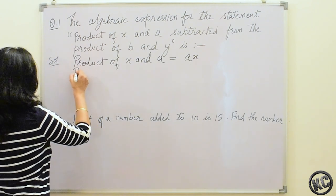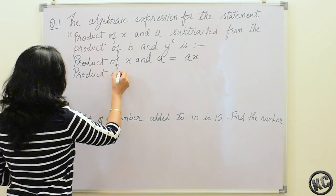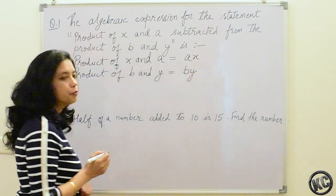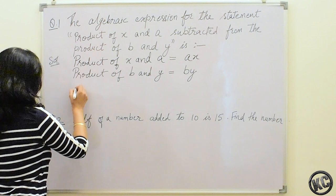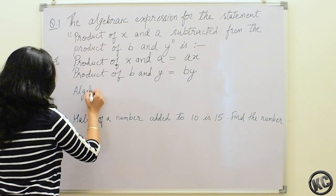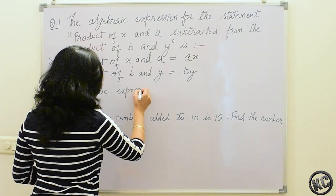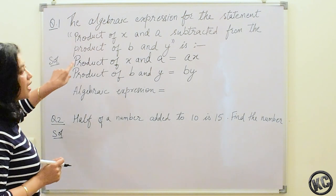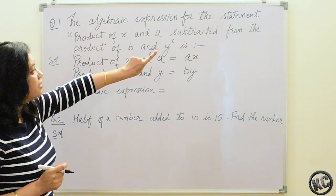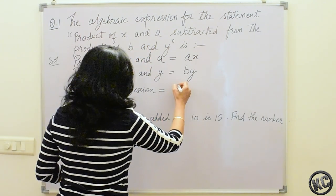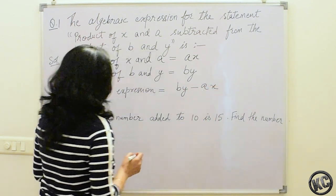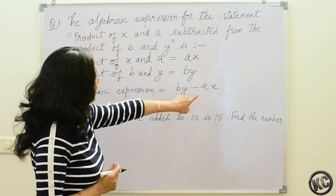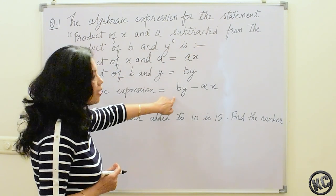Product of b and y means b multiplied by y, which is by. Now we have to write the algebraic expression. Product of x and a subtracted from the product of b and y gives us by minus ax. So this is the algebraic expression.